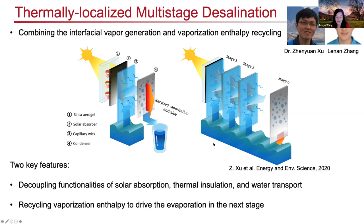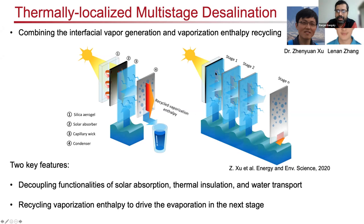A follow-up question compares front-side versus back-side heating, since traditional solar stills heat from the back side. Professor Wang clarifies that here they heat through a thin metal layer — the towel is very thin so resistance is manageable and this is accounted for in models. She also notes that since this is an air environment, evaporation remains diffusion-limited rather than kinetically limited — which is what's most important in this context.